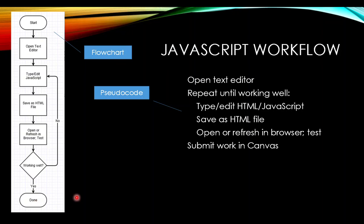Another way to describe the same thing is using pseudocode. This is not JavaScript, not Java, not Python — it's just English. We use indentation to help describe what is part of something else. We open the text editor, and then we repeat the following steps until it is working well: type and edit, save, and test in the browser. Once you're done with that, you submit the work in Canvas — notice that's outside of the repeated set of statements. I'm going to most often use pseudocode, and when we work together in class we'll use it to flesh out and make sure we understand the problem.